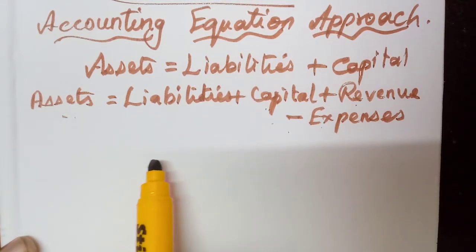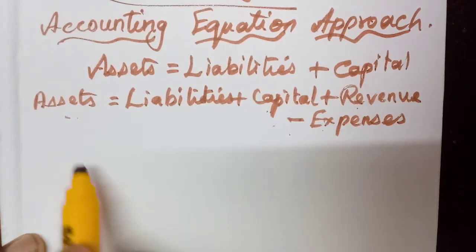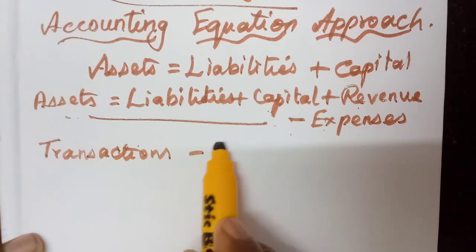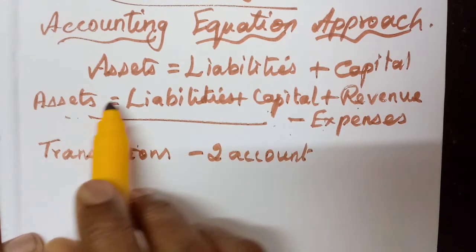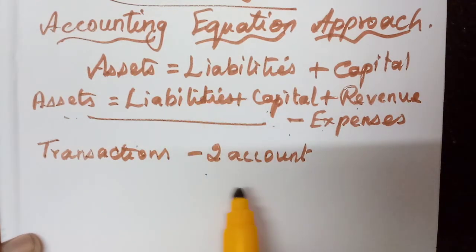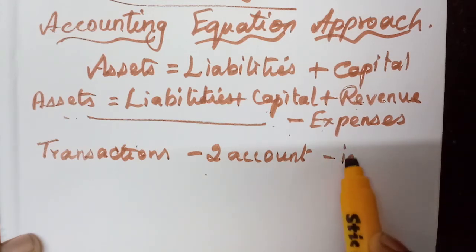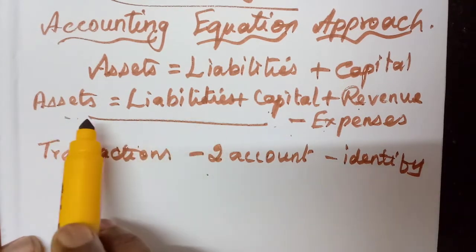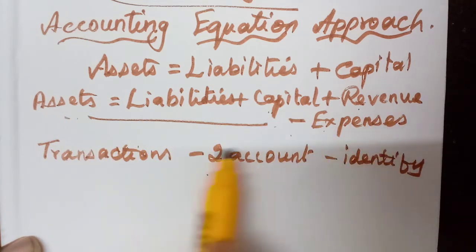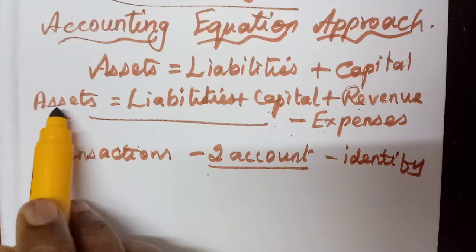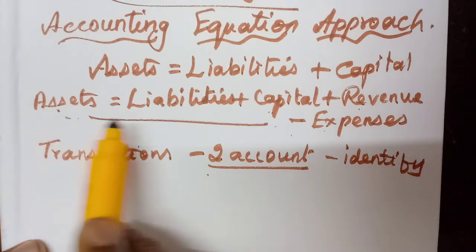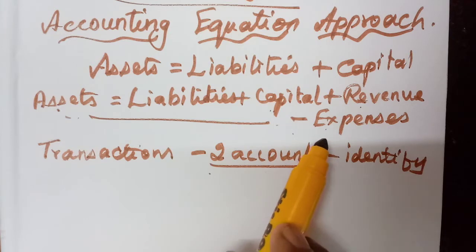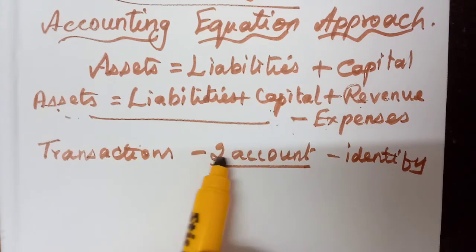Whenever we get one transaction, we have studied it has two aspects — for each and every transaction there are two accounts affected. We have studied five accounts, and any transaction will affect any two accounts from these five. We should identify those accounts — whether it is asset, liability, capital, revenue, or expense — but there will always be two accounts involved.